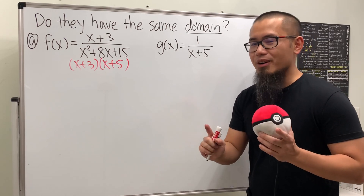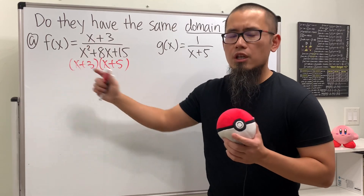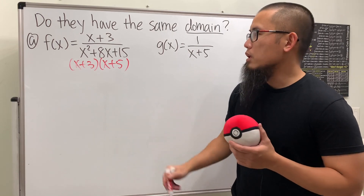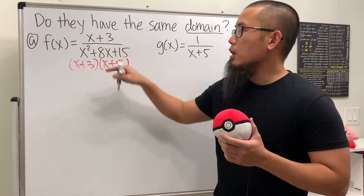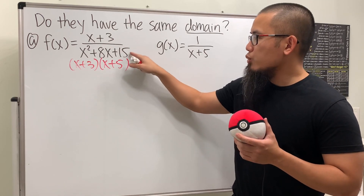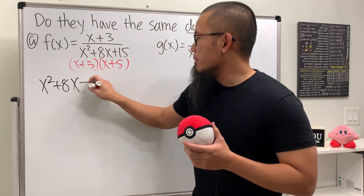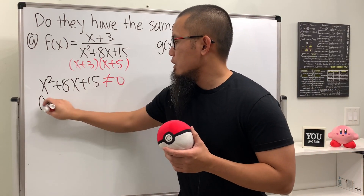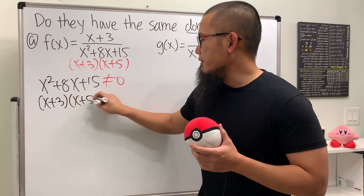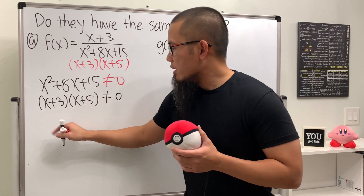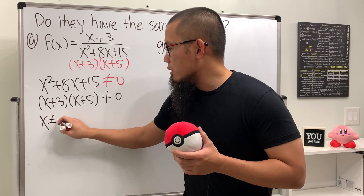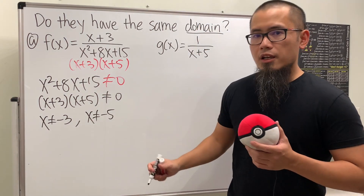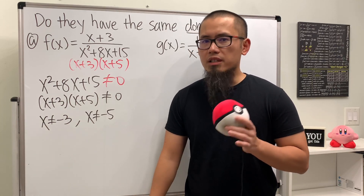Not really. Because the function is written this way first, to find the domain we have to worry about the denominator — that cannot be equal to zero. For a rational function, before you cancel anything, go to the denominator and write down x squared plus 8x plus 15 cannot equal zero. Solving by factoring: x plus 3 times x plus 5 cannot equal zero, meaning x cannot equal negative three and x cannot equal negative five. So we have two restrictions.